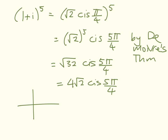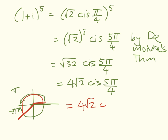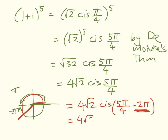That answer is technically correct, except that the convention we've already looked at in class is that we usually give our angle as going between 0 and pi, or between 0 and negative pi. So 5 pi on 4 is around here. What we want to do is re-express 5 pi on 4 as being between pi and negative pi. To do that, we're going to take off 2 pi — that is the same as removing 360 degrees. So we get 4 root 2 cis 5 pi on 4 minus 2 pi, which means my answer is 4 root 2 cis negative 3 pi on 4. So instead of measuring that huge angle, we're saying it's the same as the angle negative 3 pi on 4. Now the last thing I have to do is get that back into rectangular form.